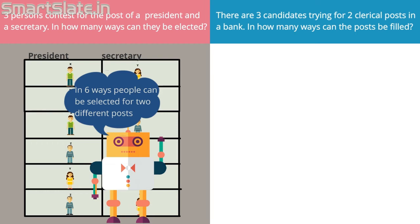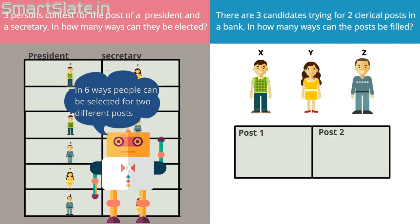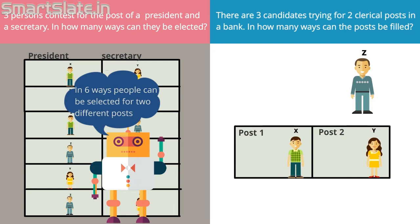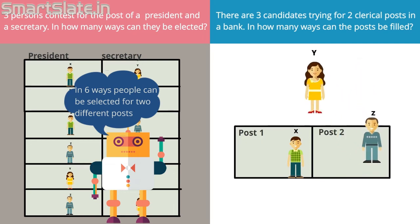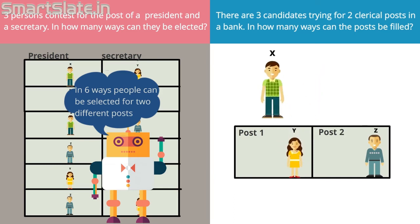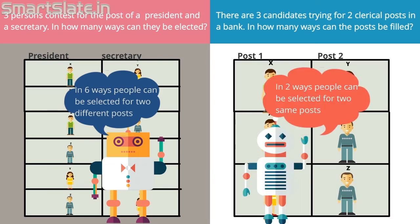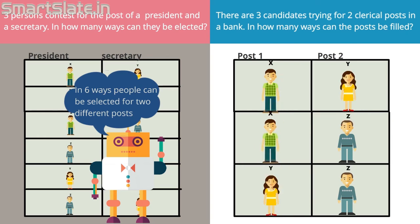Now let's consider the second problem. Again we call these three people X, Y, and Z, and we have two clerical posts in the bank. The possible choices to fill these posts are: we can select X and Y, or X and Z, or Y and Z — so there are three possibilities. Note that post one and post two are of the same rank, so selecting X and Z or Z and X gives the same meaning.